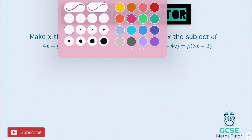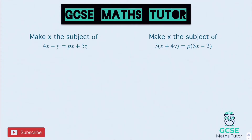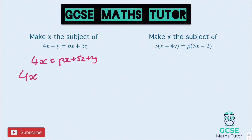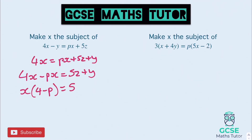OK, answers for these then. Make x the subject — I'm going to add y to both sides. So if we add y to both sides, we get 4x equals px plus 5z plus y. Move the x piece over, so 4x minus px equals 5z plus y. Factorising the left-hand side gives us x brackets 4 minus p, which equals 5z plus y.